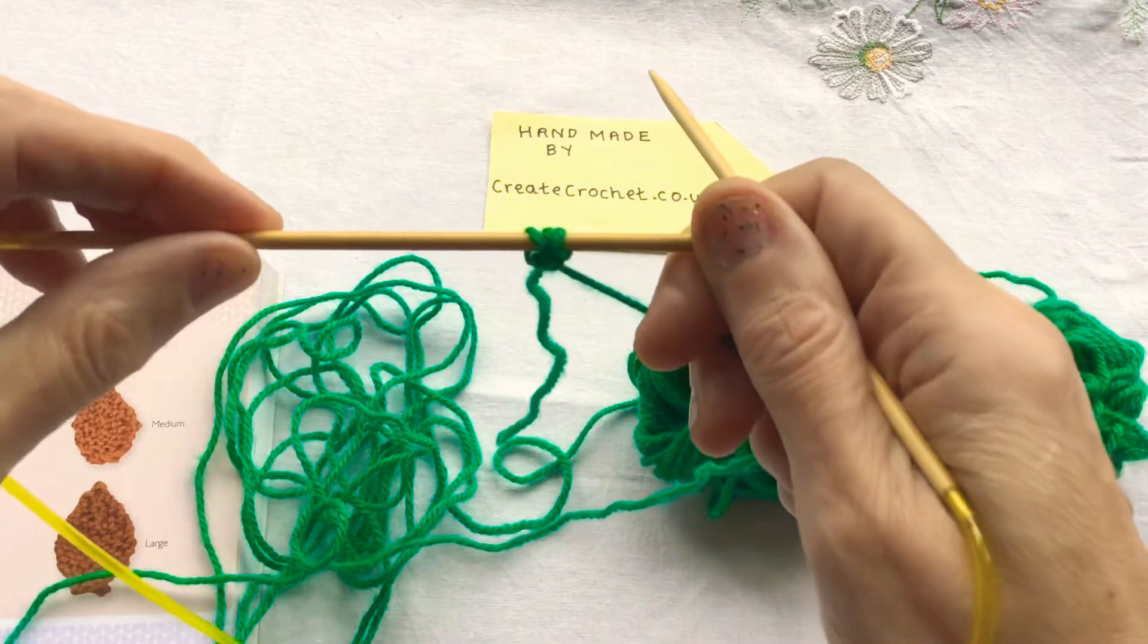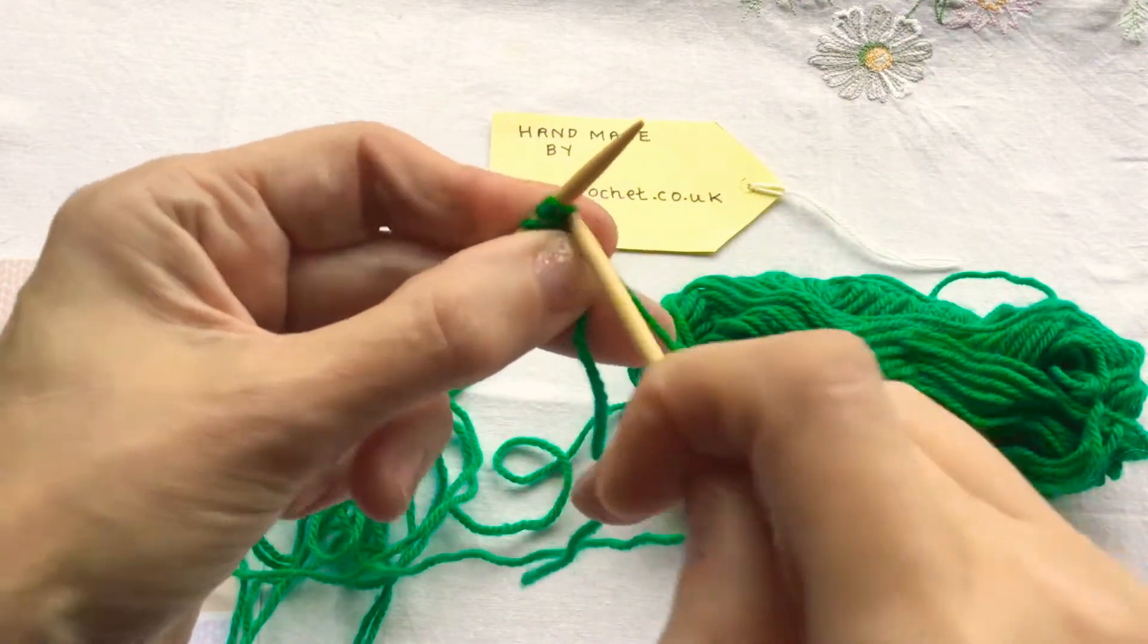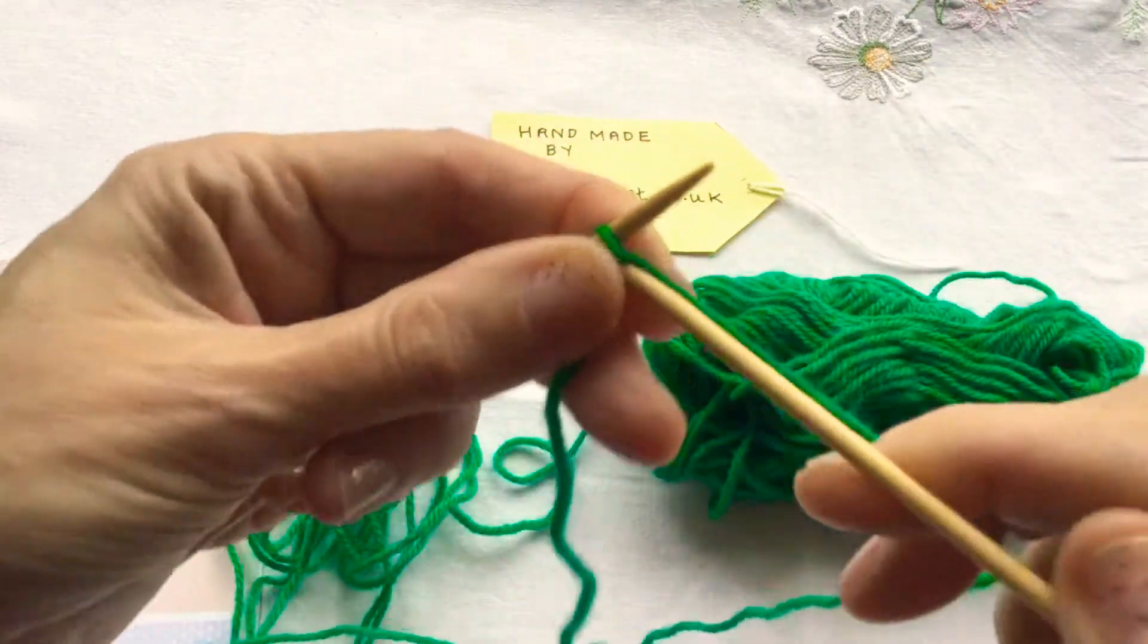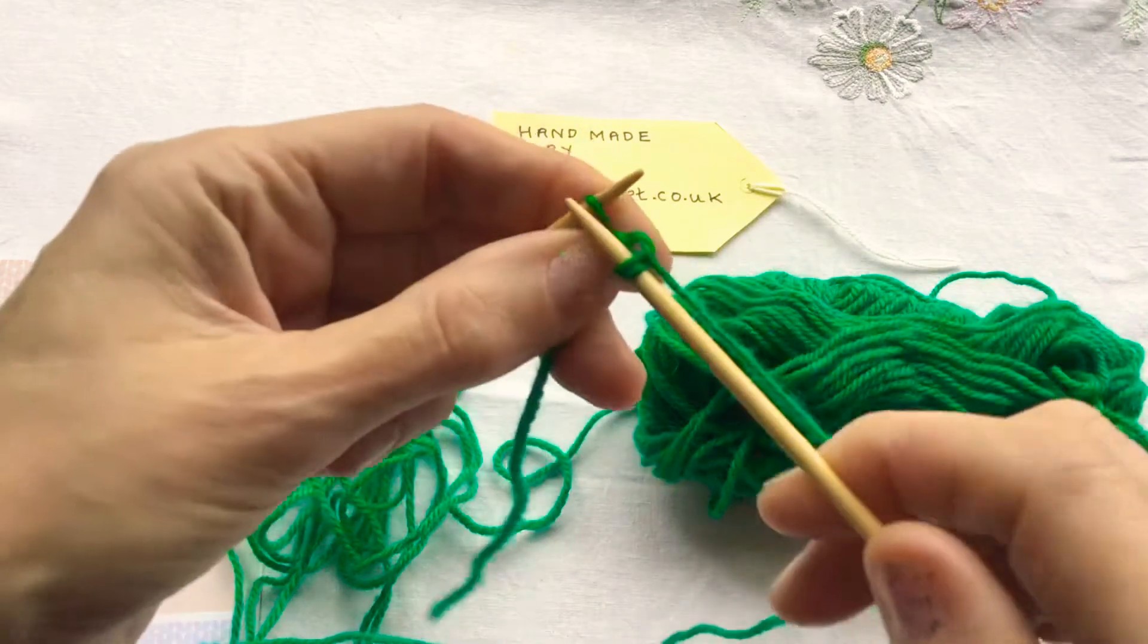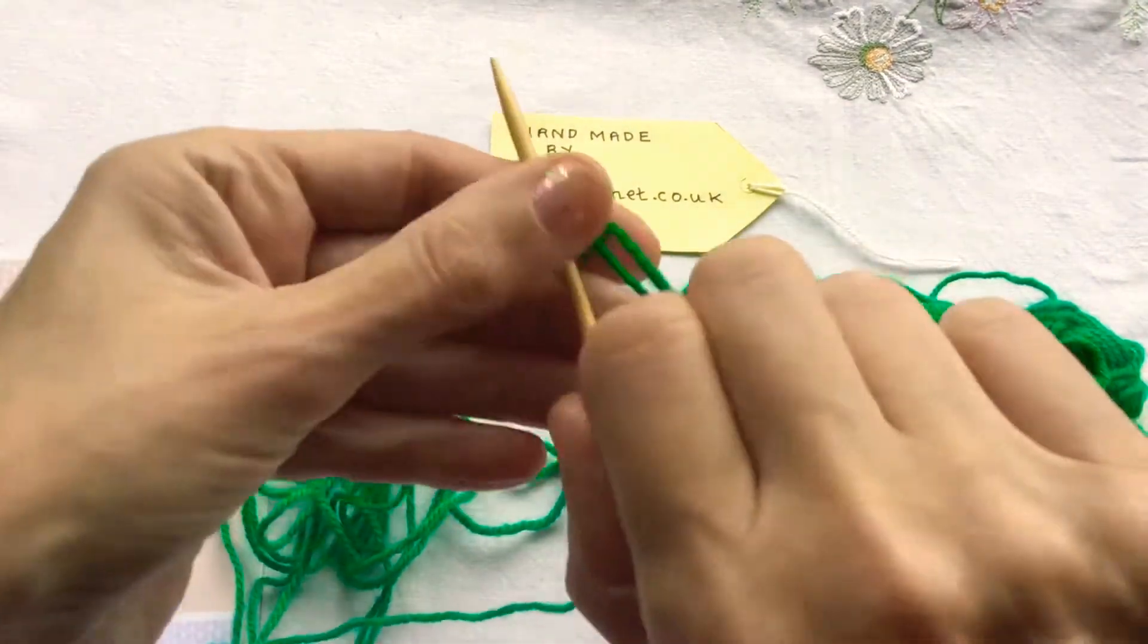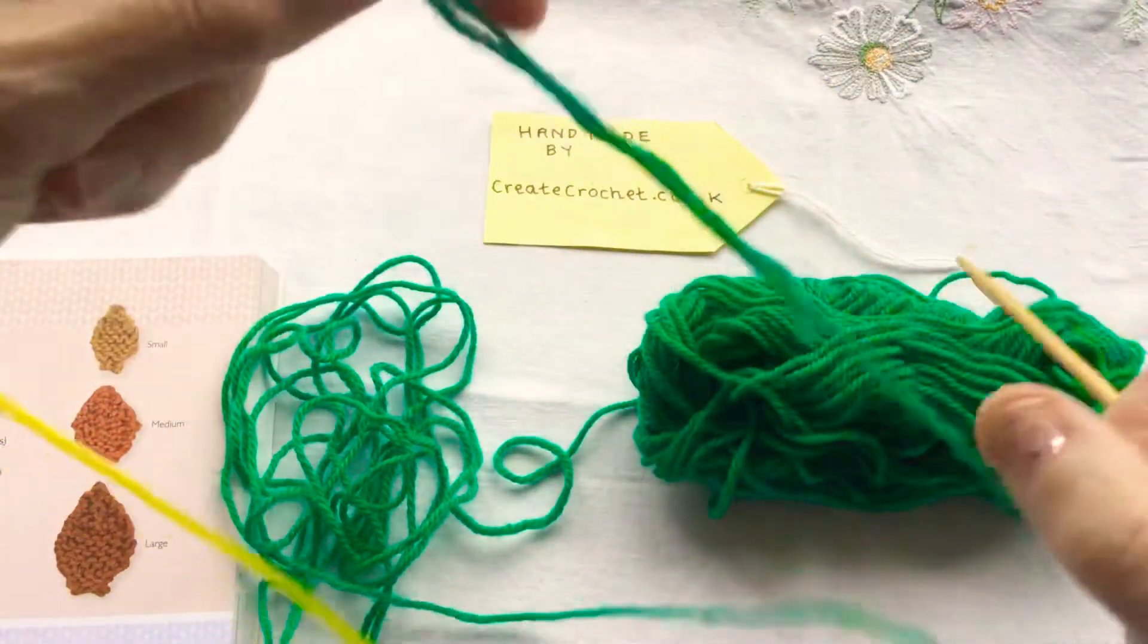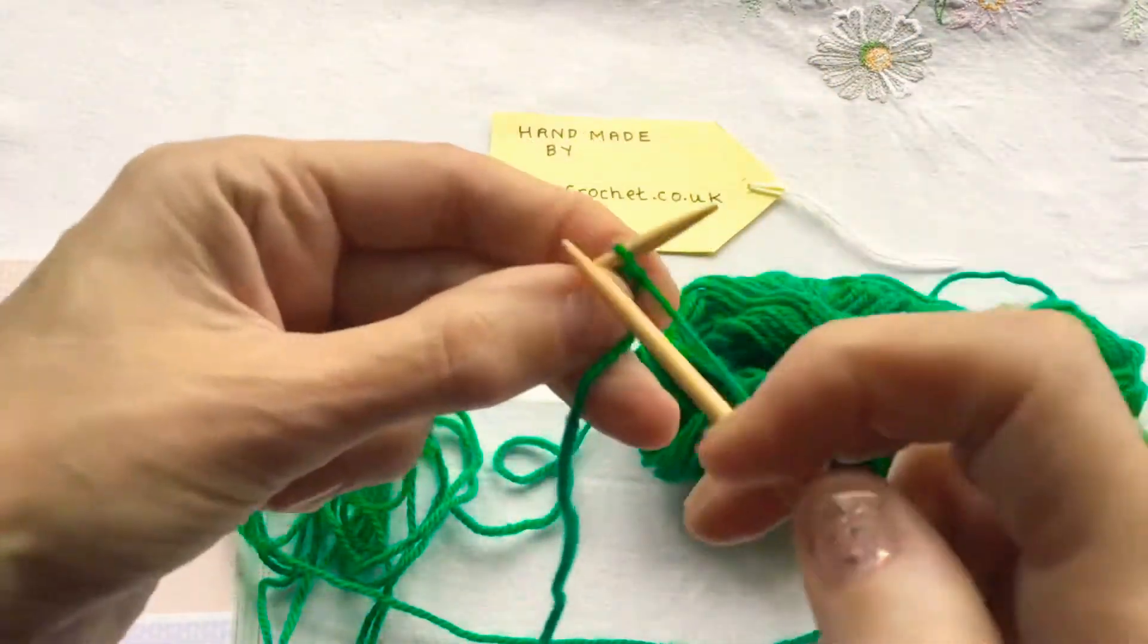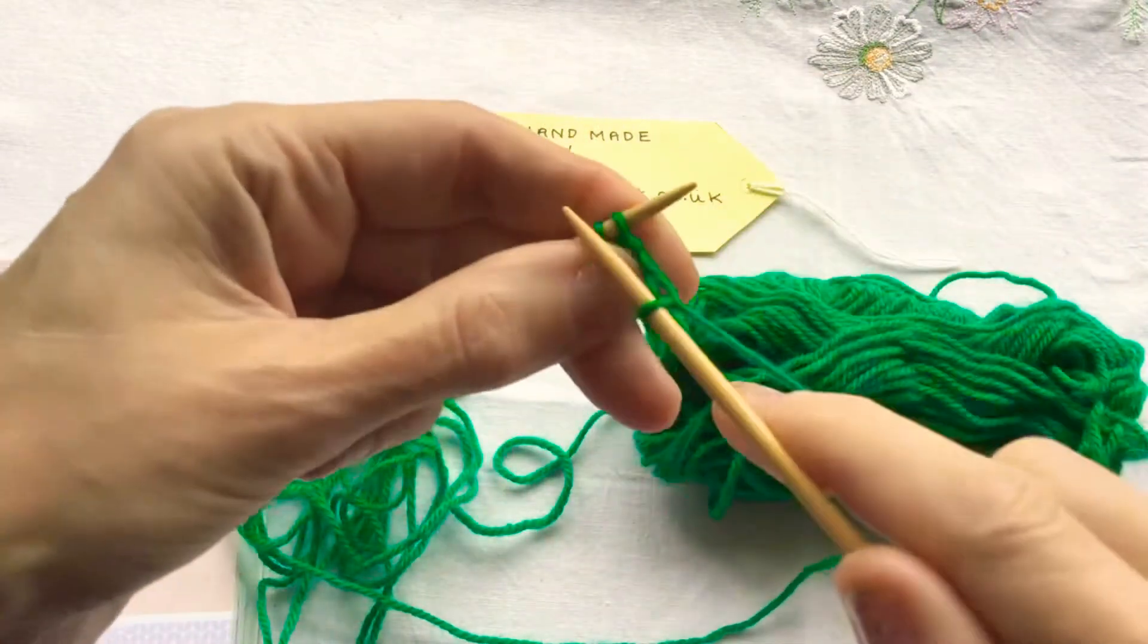To start, cast on 3 stitches. Work the first row as a knit row. Turn, work the second row as a knit row.